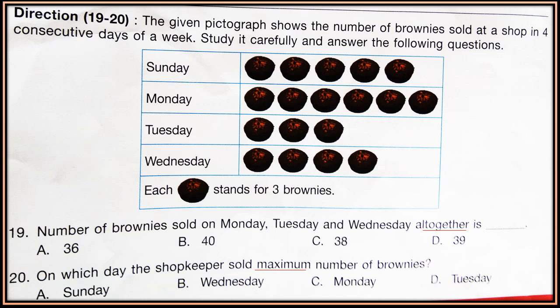Question 19. Number of brownies sold on Monday, Tuesday, and Wednesday altogether is? Now calculate the number of brownies sold on Monday, Tuesday, and Wednesday altogether. Question 20. On which day the shopkeeper sold maximum number of brownies? So select the day on which the shopkeeper sold maximum number of brownies.